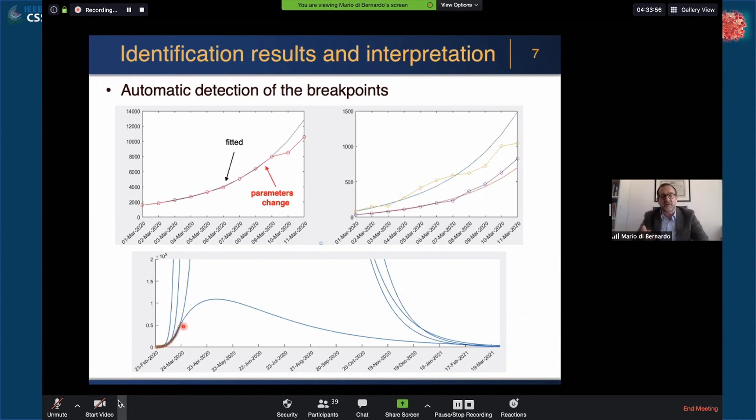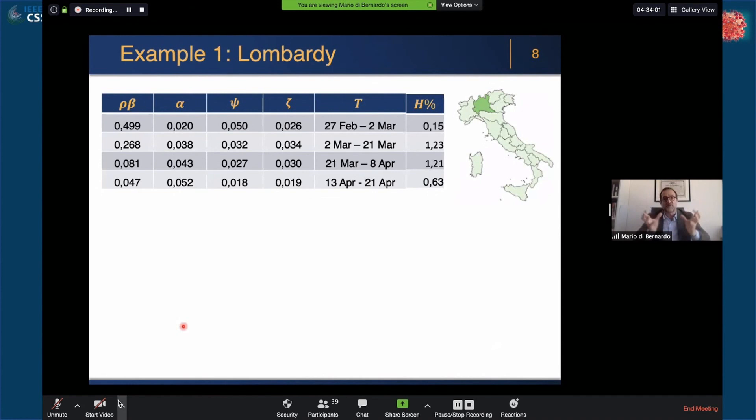Of course now we repeated this identification exercise for each region and we got a picture of the entire country. Before going into the network model, let me show you some of the things that we observed from our data analysis. I chose two examples, the case of Lombardy in the north and the case of Campania, the region where Naples is in the south.